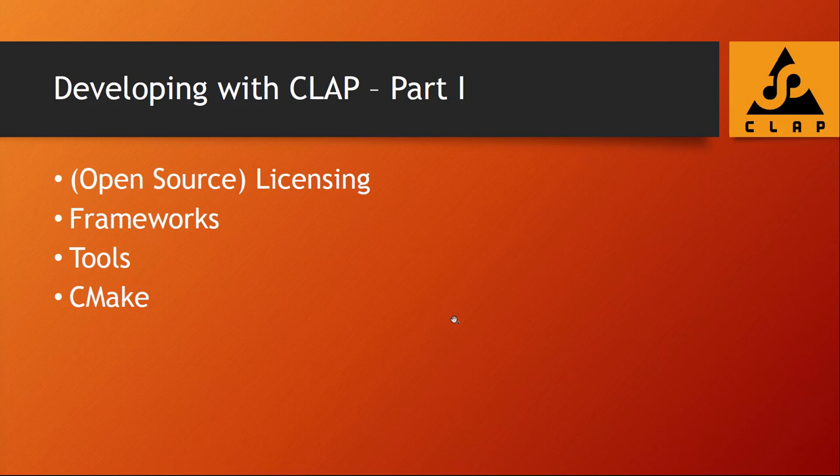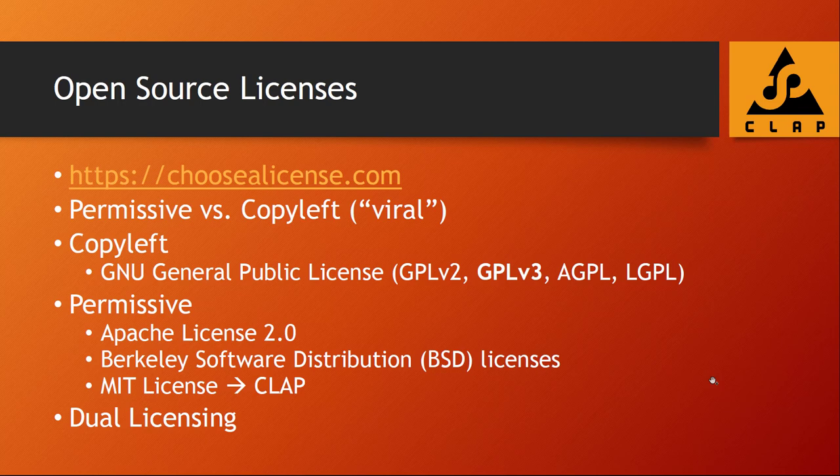Let's dive right in — first part: licensing. Every software or library you get comes with a license which you have to fulfill. There are even websites like choosealicense.com which help you if you want to put your product under a license and get all those little details. A word of warning: I'm not a lawyer, so this is not legal advice. You should definitely check with a real lawyer if you want to build a company around something like CLAP or plugins.